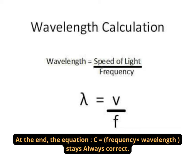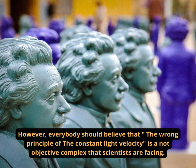At the end, the equation c equals frequency times wavelength stays always correct. However, everybody should believe that the wrong principle of the constant light velocity is a non-objective complex that scientists are facing.